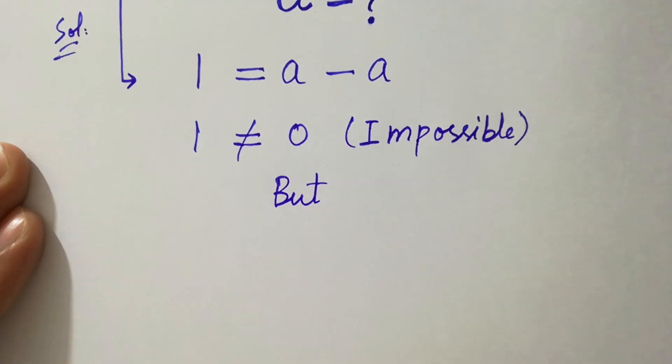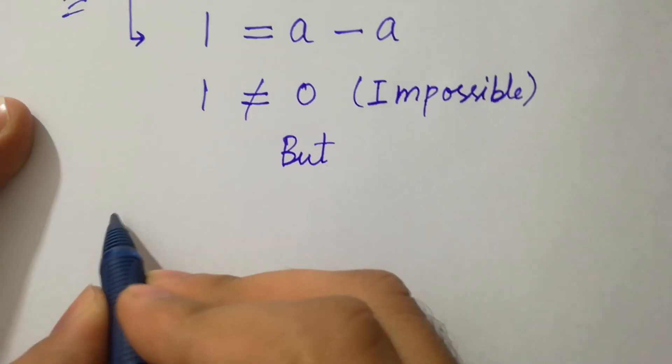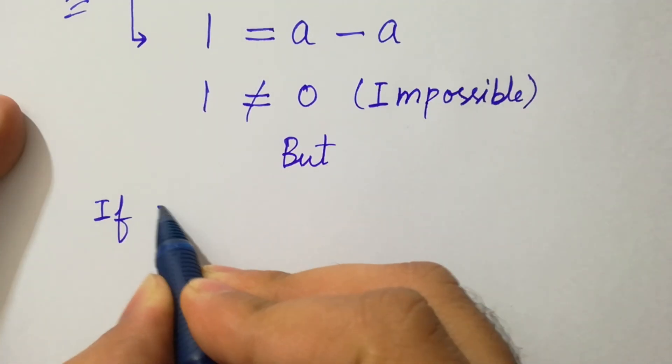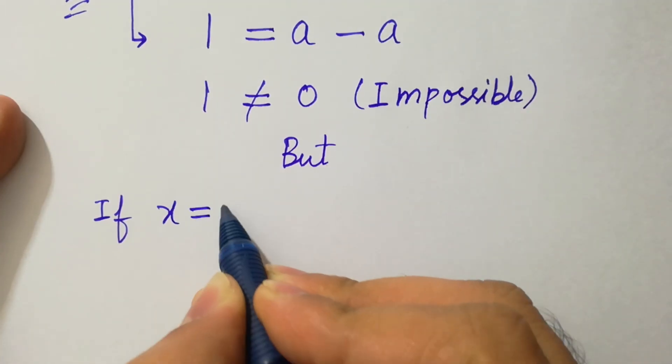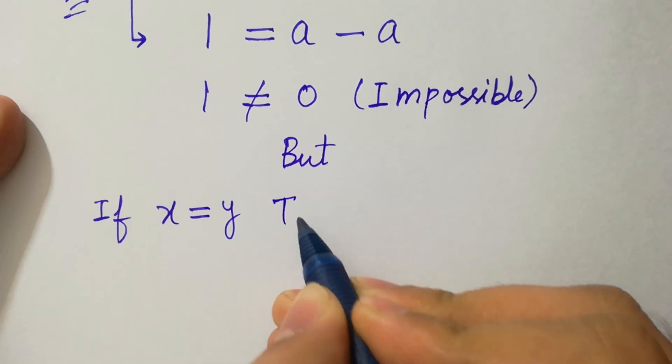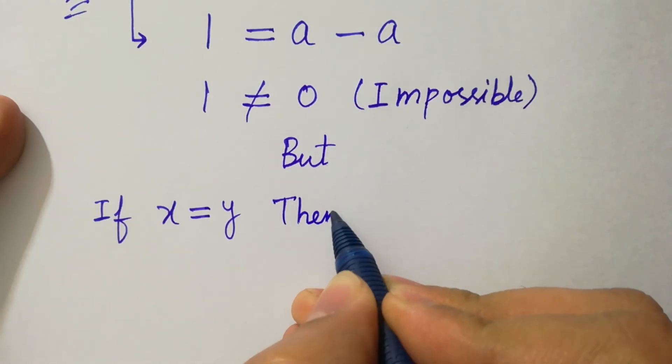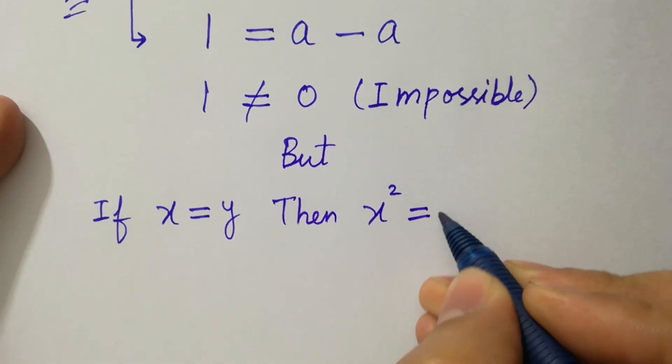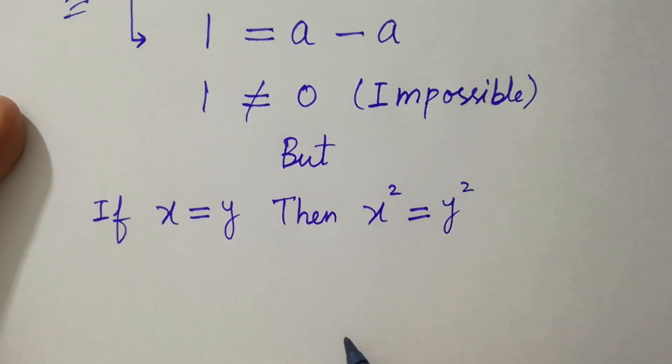But we know that if x equals y, then x squared equals y squared.